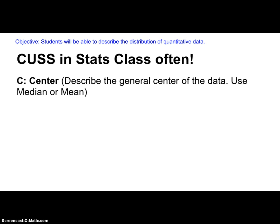C stands for center. Describe the center — you're going to describe the general center of the data. You're either going to use the median or the mean, depending on if the data are skewed or symmetric.